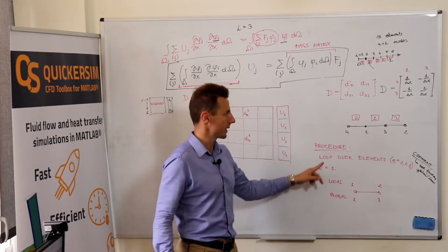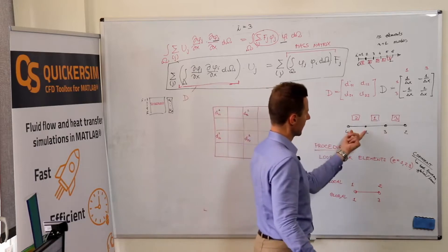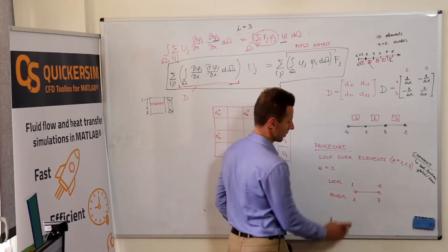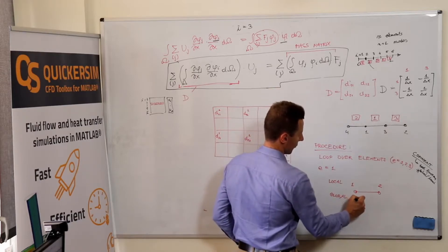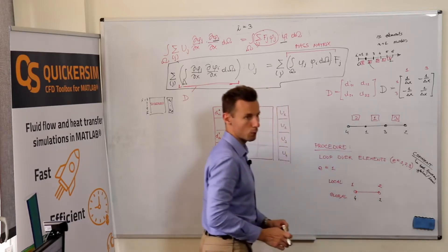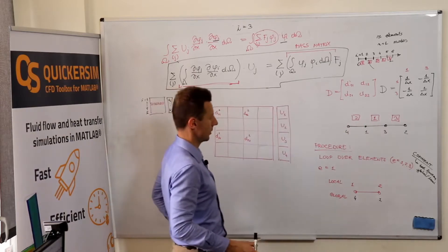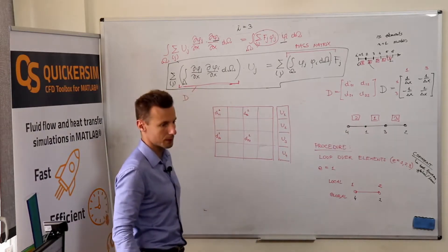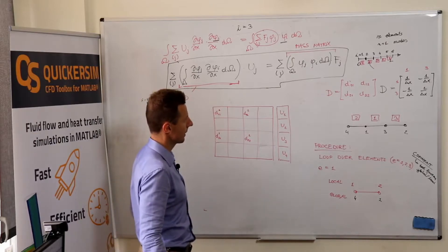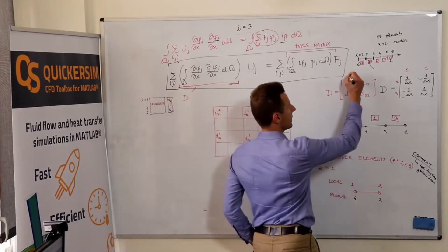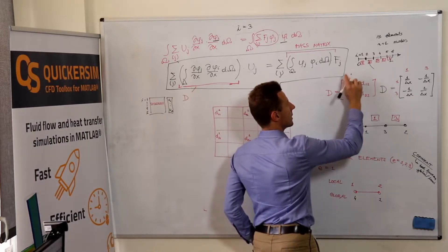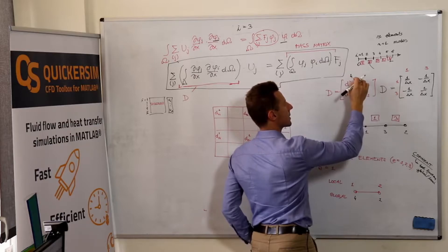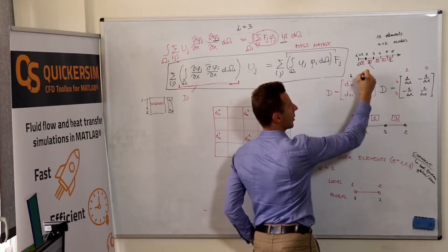So it's the end of the loop for E equals one, and we are entering the second finite element. Okay. Second finite element right now means local nodes are still one and two, but the global nodes are right now four and one. So, and this will be a bit more tricky, as you will see.